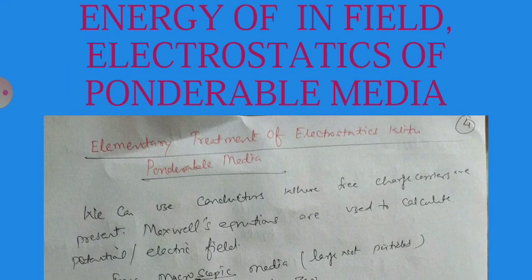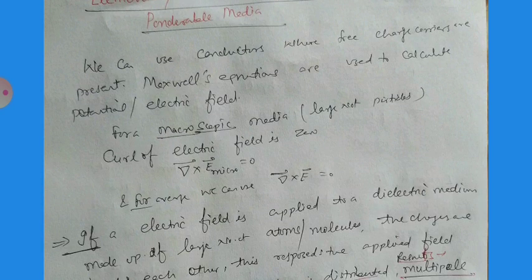For polarizable media, we consider an elementary treatment of electrostatics with dielectric media. We can use conductors where free charge carriers are present. The macroscopic equations are used to calculate the potential and electric field. For the microscopic field, we deal with a large number of particles, and since the electric field is conservative, curl E_micro = 0, giving on average ∇ × E = 0.